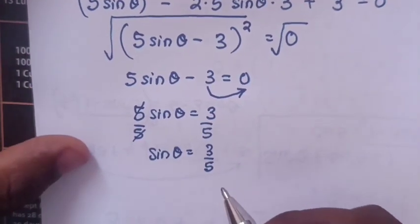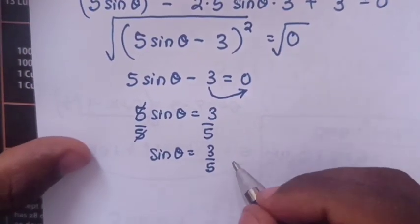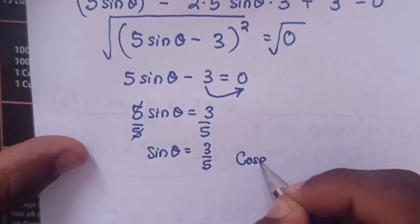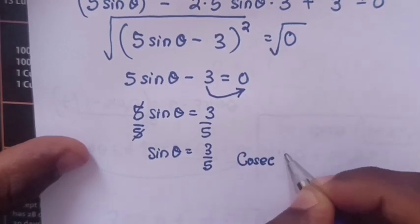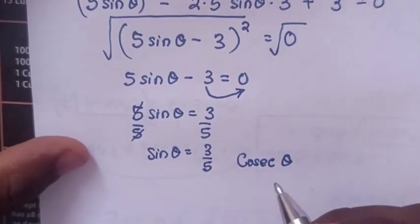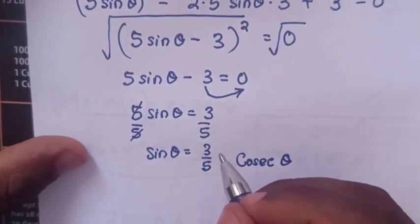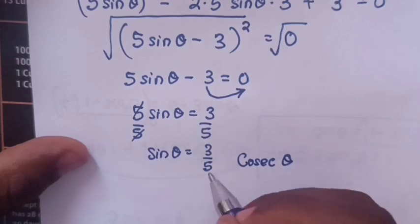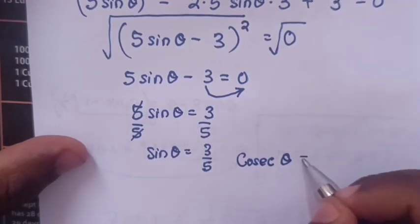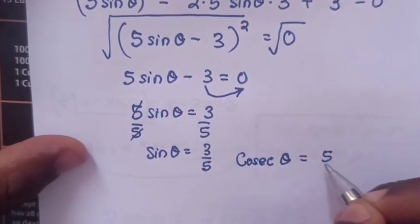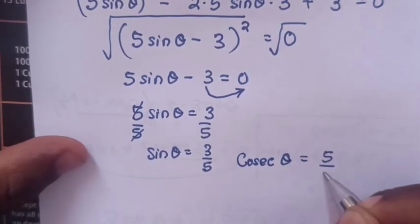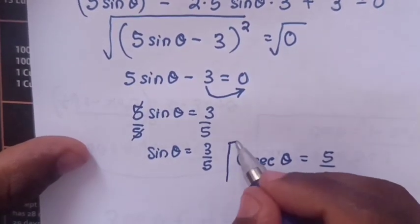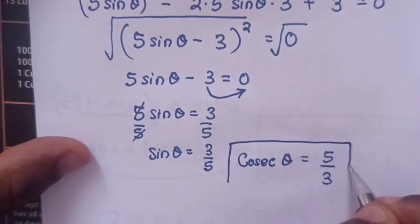Now, we are asked to find cosec θ. Cosec θ is the same as 1/sin θ, so it is the inverse of 3/5, which equals 5/3. This is the value of cosec θ.